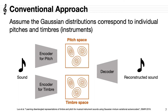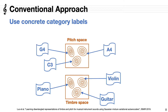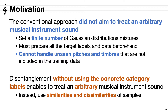The conventional approach assumes the Gaussian distributions correspond to individual pitches and timbres or instruments in each space. However, in assuming the Gaussian distributions, concrete category labels with the actual pitch or instrument names are used. This means that the conventional approach did not aim to treat an arbitrary musical instrument sound. This approach sets a finite number of Gaussian distribution mixtures, and all the target labels and data must be prepared beforehand. Therefore, they cannot handle unseen pitches and timbres that are not included in the training data.